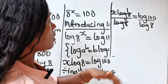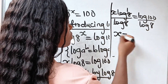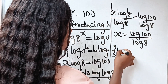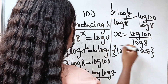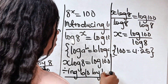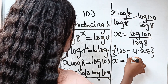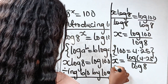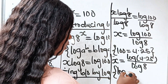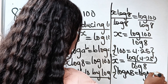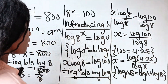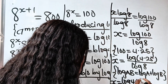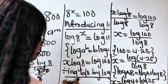We can express 100 as 4 multiplied by 25. Now recall that log of A multiplied by B is equal to log A plus log B. That means we can write this as x is equal to log 4 plus log 25 divided by log 8.